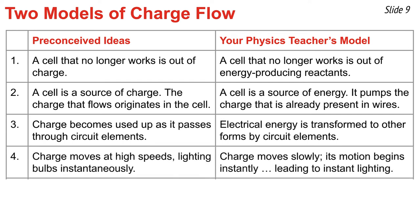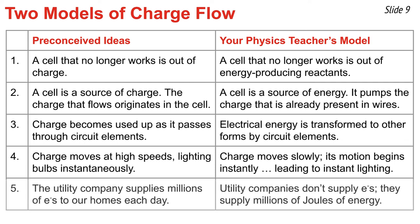Instead of saying that charge moves at high speeds, lighting bulbs instantaneously, it's better to say that charges move very, very slowly, but its motion begins instantly, leading to instant lighting by those charges that are already present in the light bulb. Instead of saying that the utility company supplies millions of electrons to our homes each day, it's better to say that the utility company doesn't supply electrons at all. After all, we don't need them. We already have them. What they supply are millions of joules of energy.